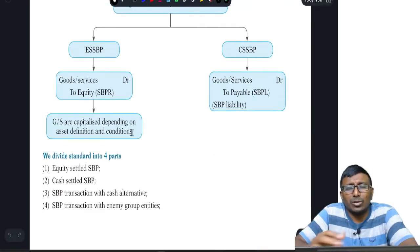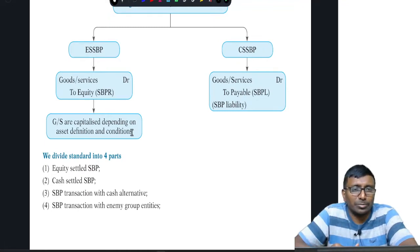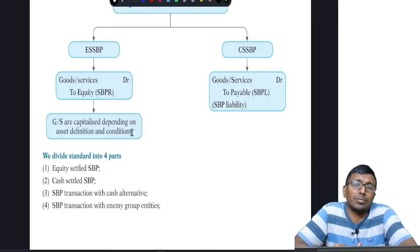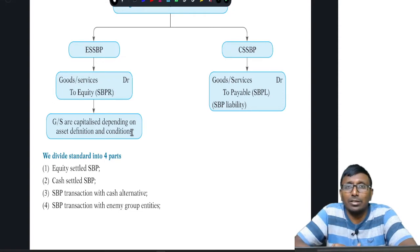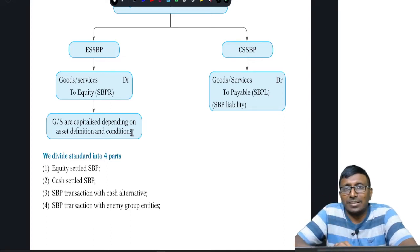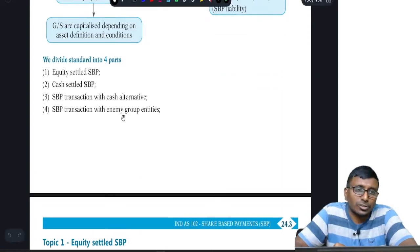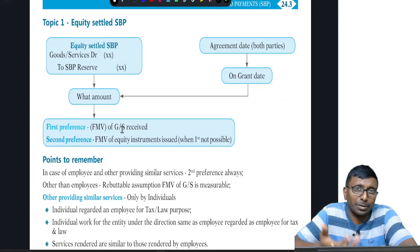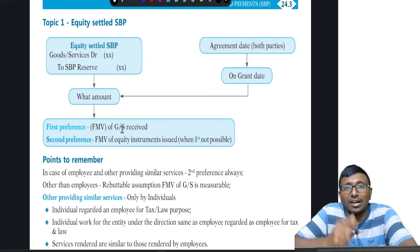For equity settled share based payment, the initial journal entry is: Employee Benefit Expense Account debit to Share Based Payment Reserve (SBPR). At the time of exercising: SBPR Account debit to Equity Share Capital and Securities Premium. For cash settled SBP: Employee Benefit Expense Account debit to Share Based Payment Liability (SBPL), and on settlement: SBPL debit to Cash or other asset. The value is recorded at the grant date rate.